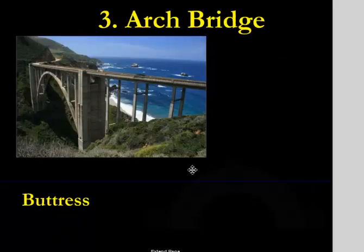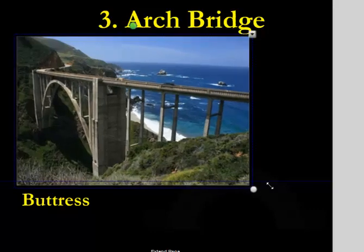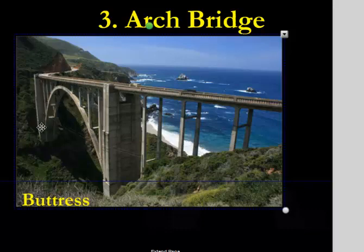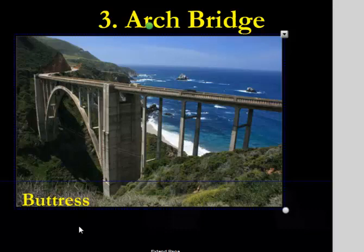Here's another arch bridge. Here's the arch. There's the road on top, and that arch is super strong because arches are just strong shapes. But look what's on each side — you got a buttress here and another buttress over there. What would happen if those buttresses were removed? That whole bridge just collapses — that arch just flattens, just like you saw with that animation.